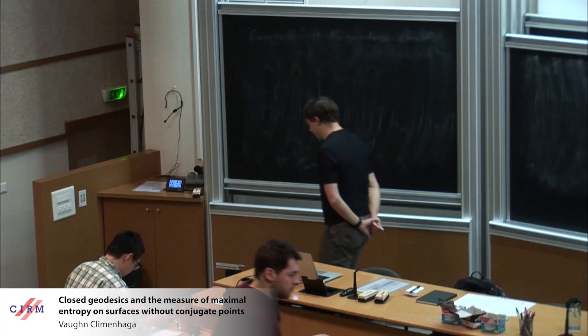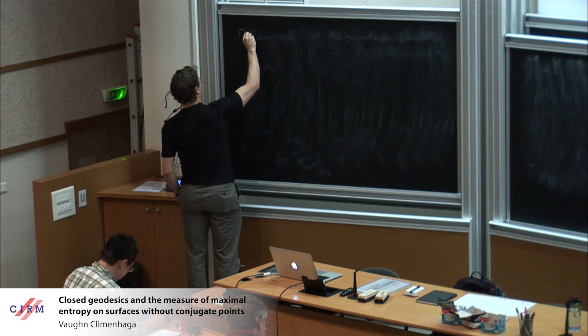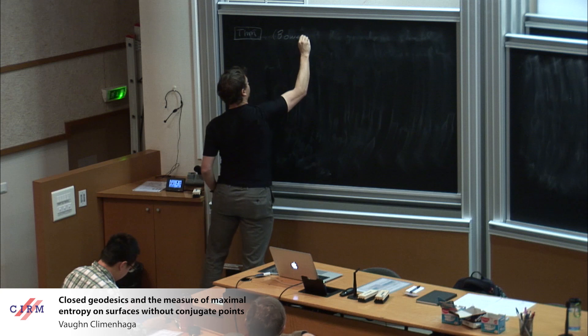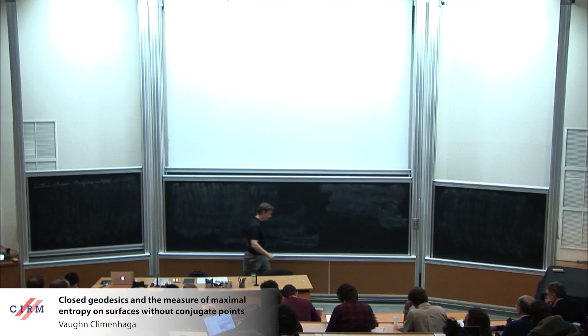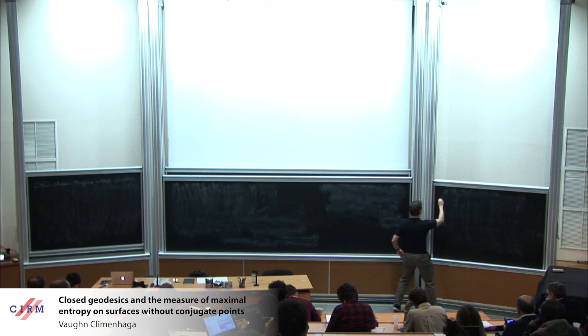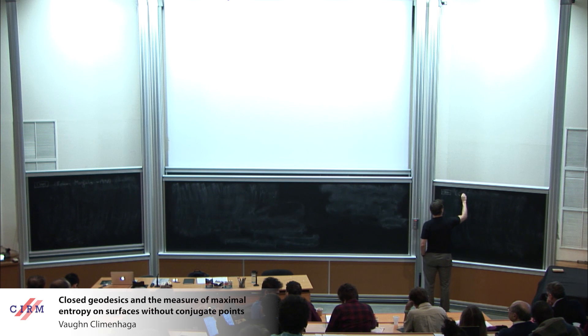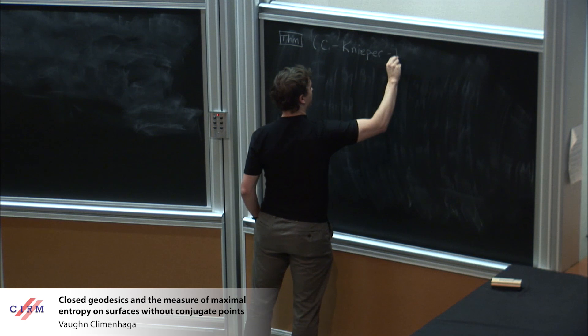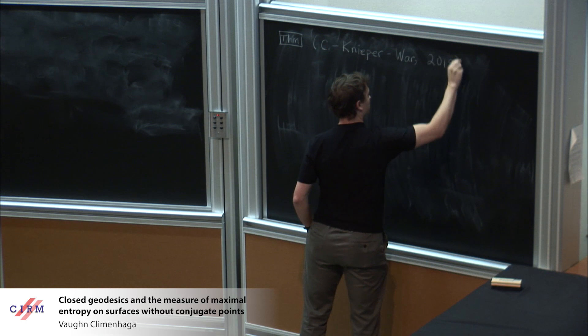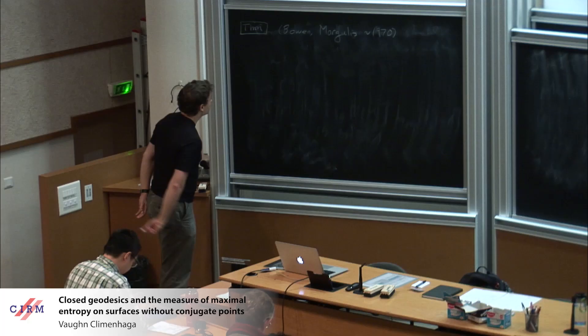Thank you to the organizers for giving me the opportunity to come and speak, and thank you for coming and listening. I'm going to start by stating a quite classical theorem which goes back to Bowen and Margulis for Anosov flows, and once I do that I'll fill that in momentarily. Then I'll state a result which is ostensibly the purpose of this talk — joint work with Gerhard Knieper and Kadim Warr from this year. The general theorem has to do with topologically mixing Anosov flows, while this new theorem is the more geometric one in the setting of geodesic flows with no conjugate points.